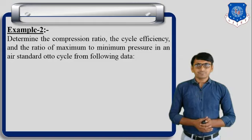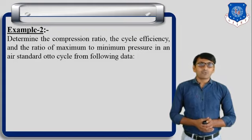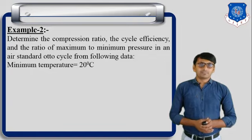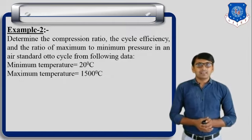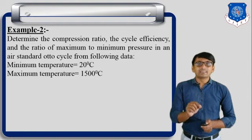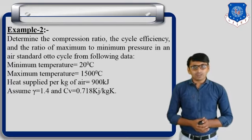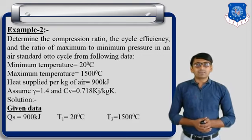Example number two is also an example of the Otto cycle. Determine the compression ratio, cycle efficiency, and ratio of maximum to minimum pressure in an air standard Otto cycle from the following data: minimum temperature T1 is 20 degree Celsius, maximum temperature T3 is 1500 degree Celsius, heat supply per kg of air is 900 kilojoule, gamma is 1.4, and Cv is 0.718 kilojoule per kg Kelvin.